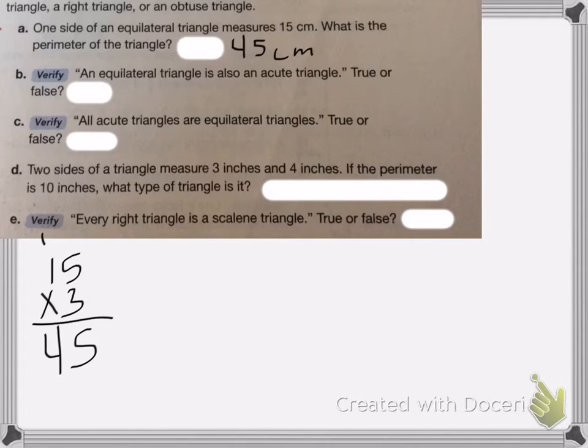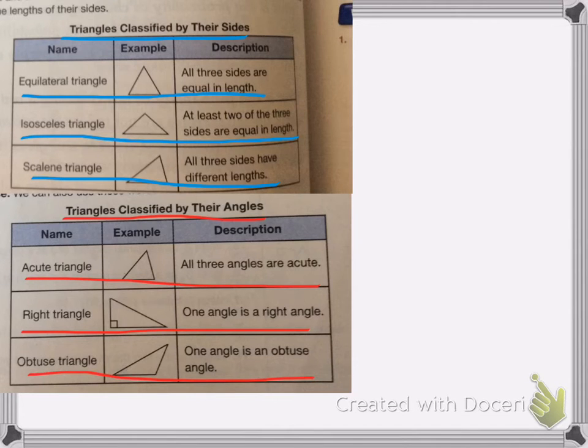Number B, an equilateral triangle is also an acute triangle. True or false? So we're going to look. If it's an equilateral triangle, all three sides are equal in length.